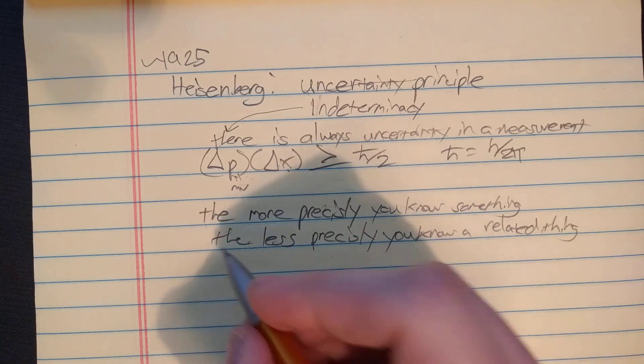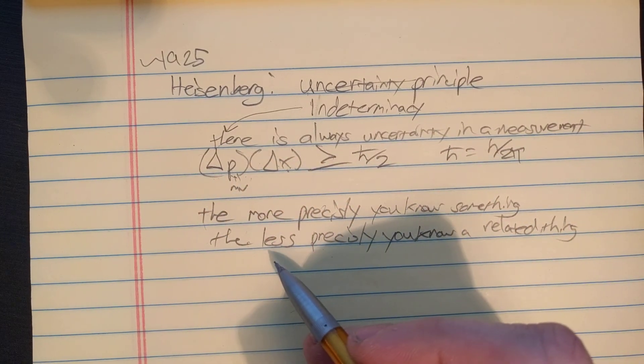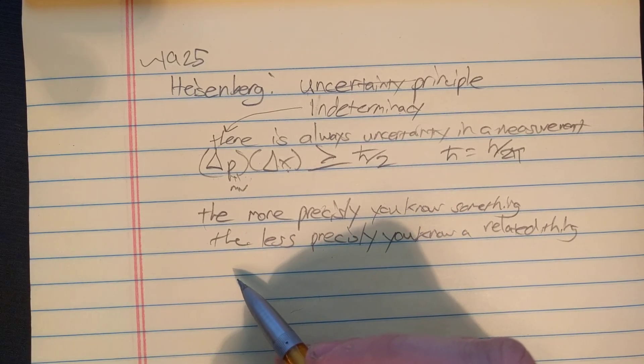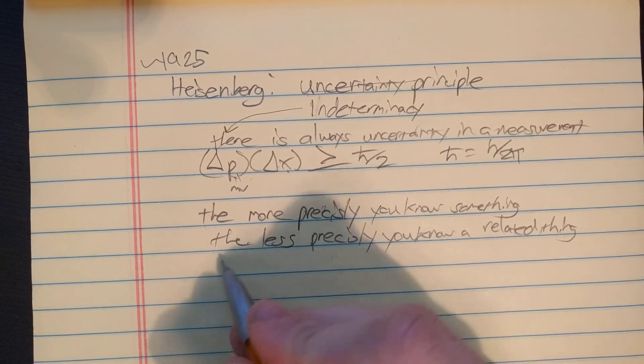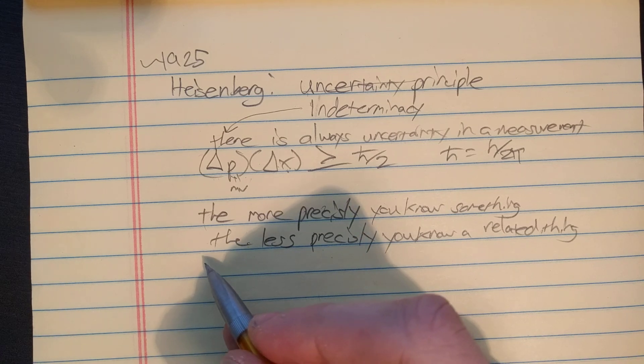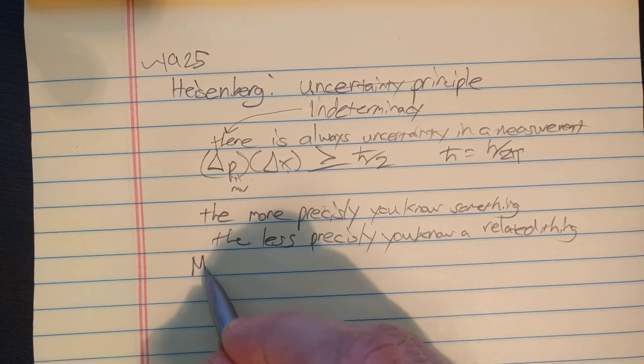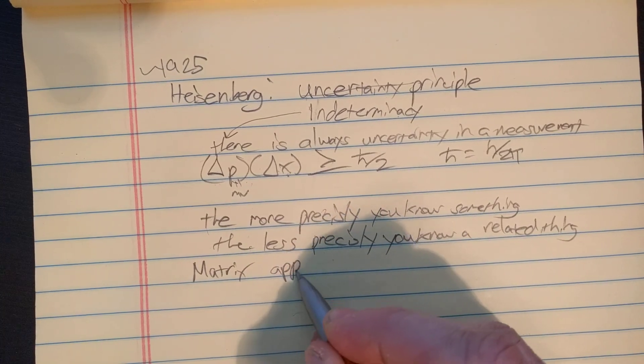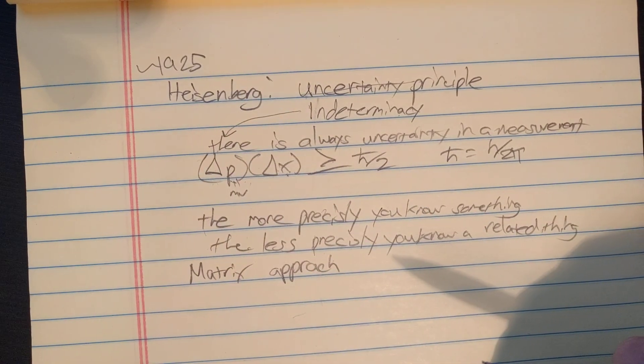I should also mention that, so what I wrote on the previous page was that Schrodinger used the wave equation, well his equation was a partial differential equation. If you didn't understand the subject of math called partial differential equations, well then you weren't really sure what Schrodinger was describing. But Heisenberg used a matrix formulation, a matrix approach. If you knew linear algebra, you could understand what Heisenberg was saying.